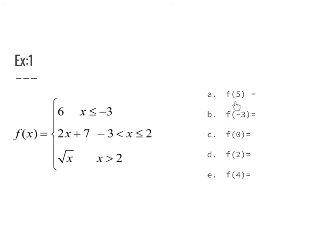For f(5): 5 is not less than or equal to negative 3, it's not between negative 3 and 2, but it is greater than 2, so I use the third piece. The answer is the square root of 5. For f(negative 3): the middle portion requires x strictly greater than negative 3, so negative 3 does not qualify. Since negative 3 is less than or equal to itself, I use the first piece, and the answer is just 6.